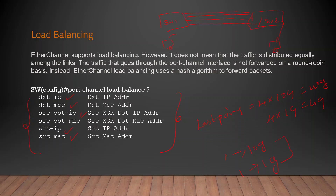Traffic is load balanced across all ports — for example, 4x10G giving 40G. If one link carries more traffic than its capacity, congestion and drops can occur. To avoid this, an efficient load balancing algorithm distributes traffic so all ports are used, typically around 80-90% utilization per port.